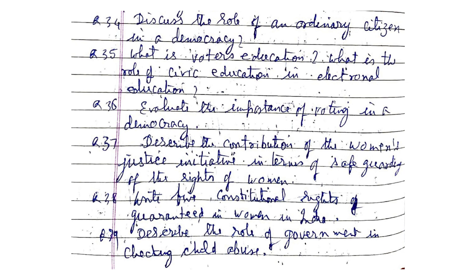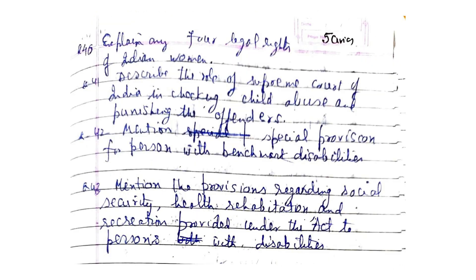Describe the contribution of the Women's Justice Initiative in terms of safeguarding the rights of women. Write down the five constitutional rights guaranteed for women in India. Describe the role of the government in checking child abuse. Explain any four legal rights of Indian women. Describe the role of the Supreme Court of India in tackling child abuse and punishing offenders.